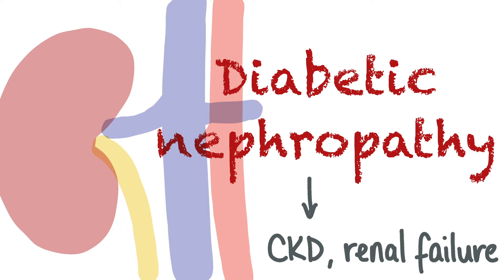Diabetic nephropathy is a common complication of diabetes and it can result in CKD and renal failure. People with diabetes are screened for diabetic nephropathy annually by checking the albumin to creatinine ratio in an early morning urine sample. If the ratio is above 2.5, then this is indicative of microalbuminuria, which is a sign of diabetic nephropathy.